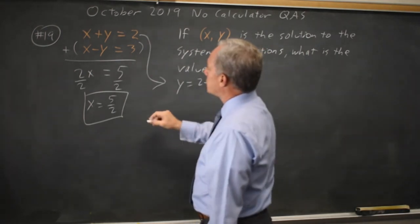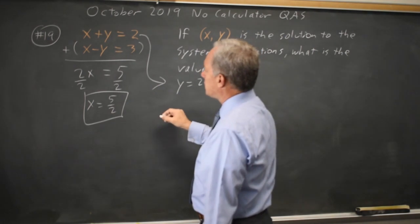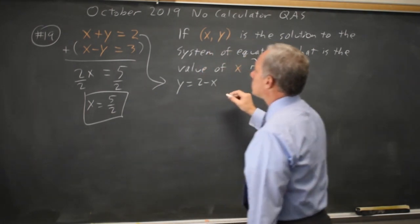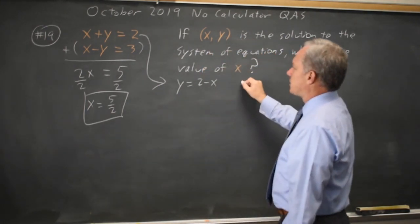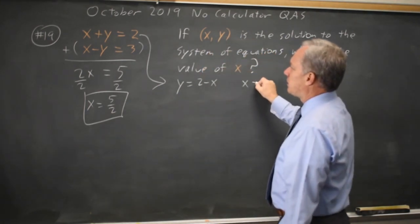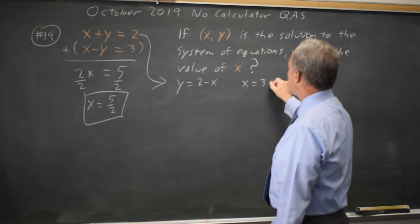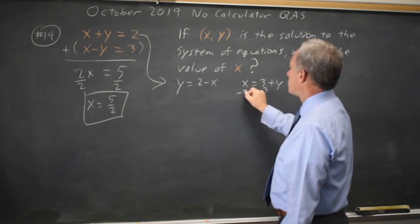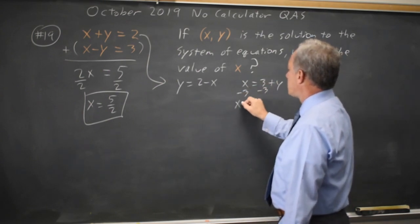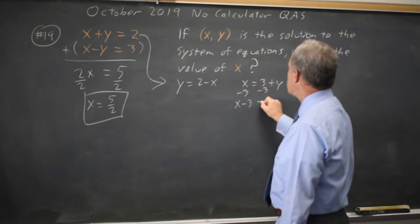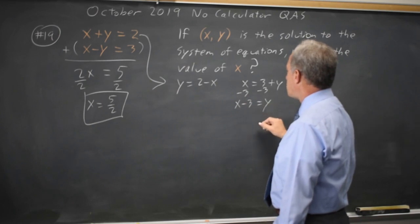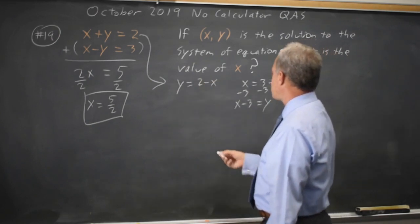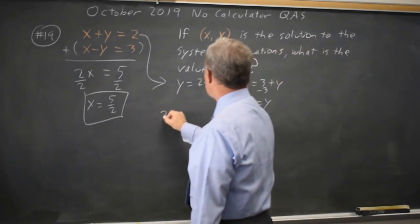Now solve the second equation for y. Add y to both sides: x equals 3 plus y. Subtract 3 from both sides: x minus 3 equals y. Since these two expressions are both equal to y, they're equal to each other.